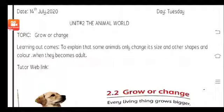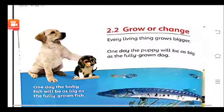Our learning outcome is to explain that some animals only change their size, while others change their shape and color when they become adult. After the study of this topic, you will be able to explain that some animals change only their size, some change shape, and some others only change color as they become adult.